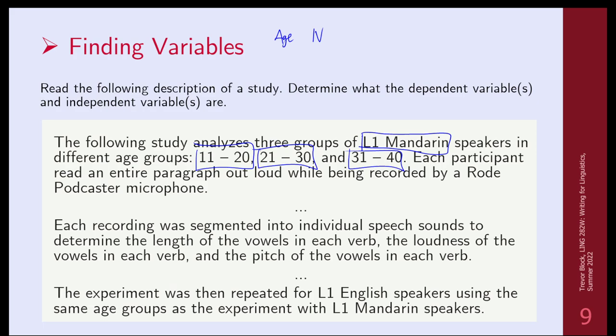Each participant read an entire paragraph out loud while being recorded. Each recording was segmented into individual speech sounds to determine the length of the vowels in each verb, the loudness of the vowels in each verb, and the pitch of the vowels in each verb. In terms of DVs: vowel length, vowel loudness, and vowel pitch are all things being measured — so we have three DVs in this case.